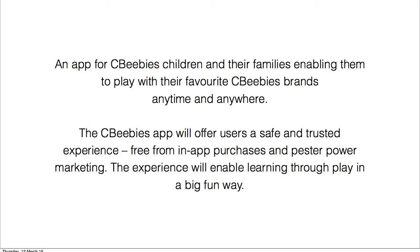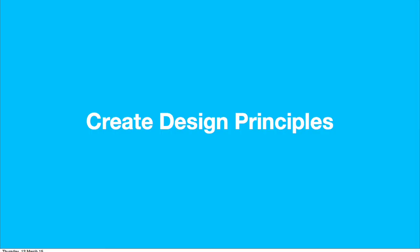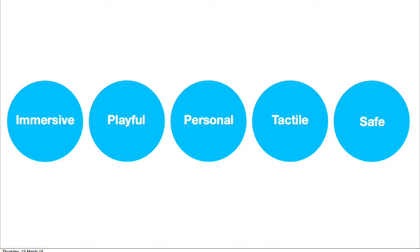Once we'd agreed on the mission statement, I always end up creating some design principles. It's really important to create design principles — it starts to bring the thing to life and helps to ground what this thing is going to be. Looking at the principles from the Playtime app: we knew we wanted it to feel immersive, it had to be playful, it had to be personal, we wanted it to feel tactile, and importantly it had to be safe because it's aimed at a young audience. By understanding these principles, we could go away and start design explorations on what each of these different things mean, and it helps again to align everybody in the same direction.